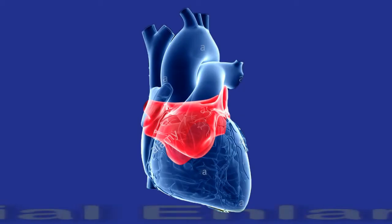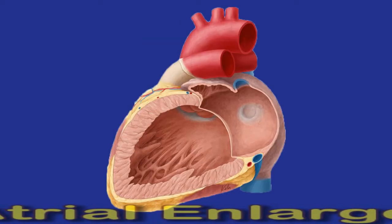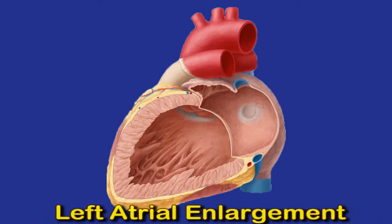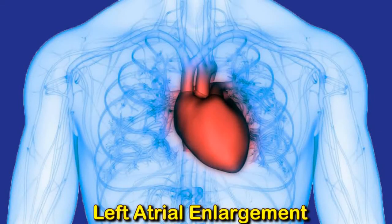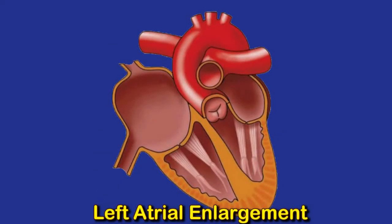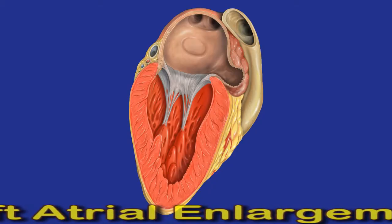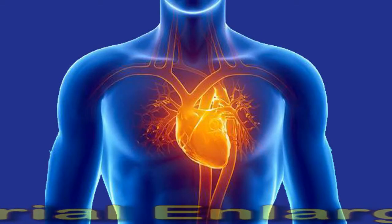Left atrial enlargement: causes and symptoms. The left atrium is one of four chambers in the heart and is located on the upper left-hand side. The lower chambers are known as ventricles. The right side of the heart is responsible for pumping blood to the lungs to collect oxygen, while the left side pumps blood to the rest of the body. Several heart problems can cause the left atrium to swell — when this happens it is called left atrial enlargement, and it is linked to several conditions including atrial fibrillation and heart failure.